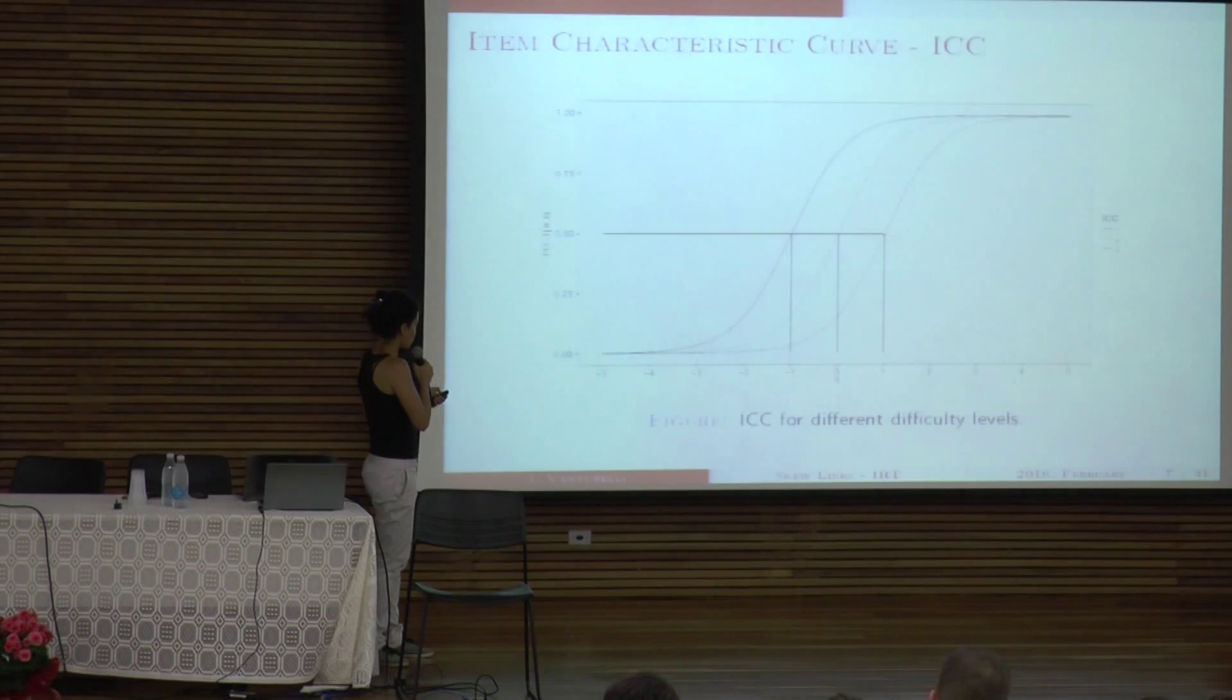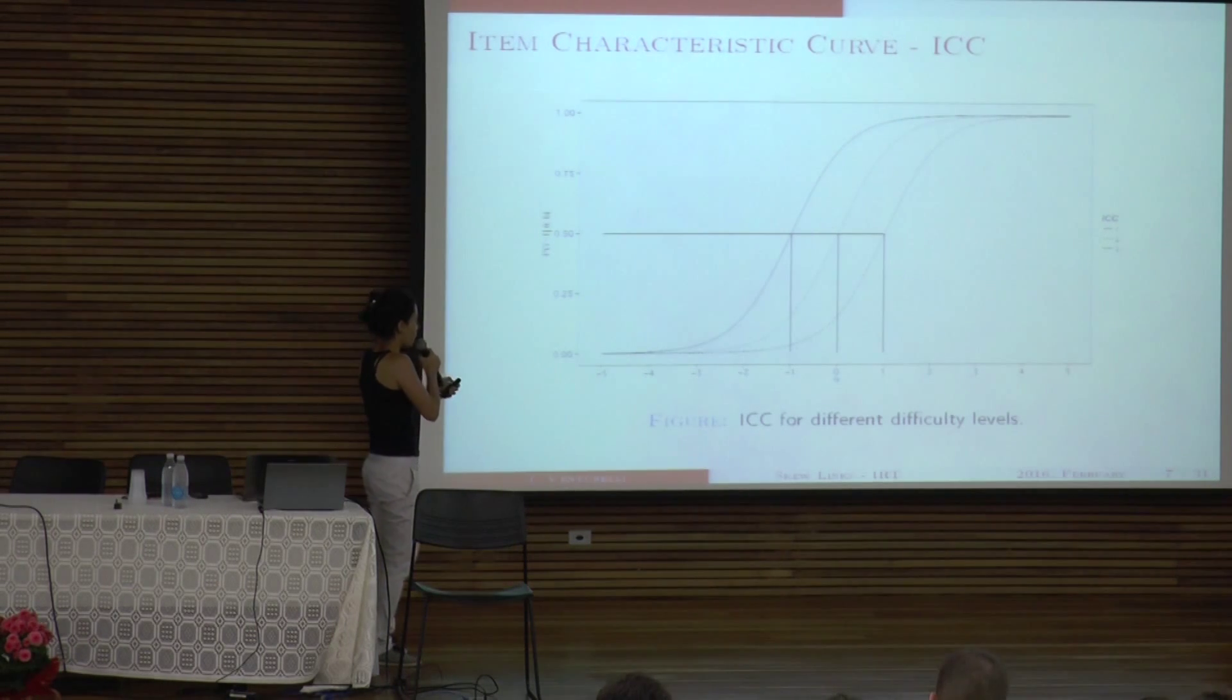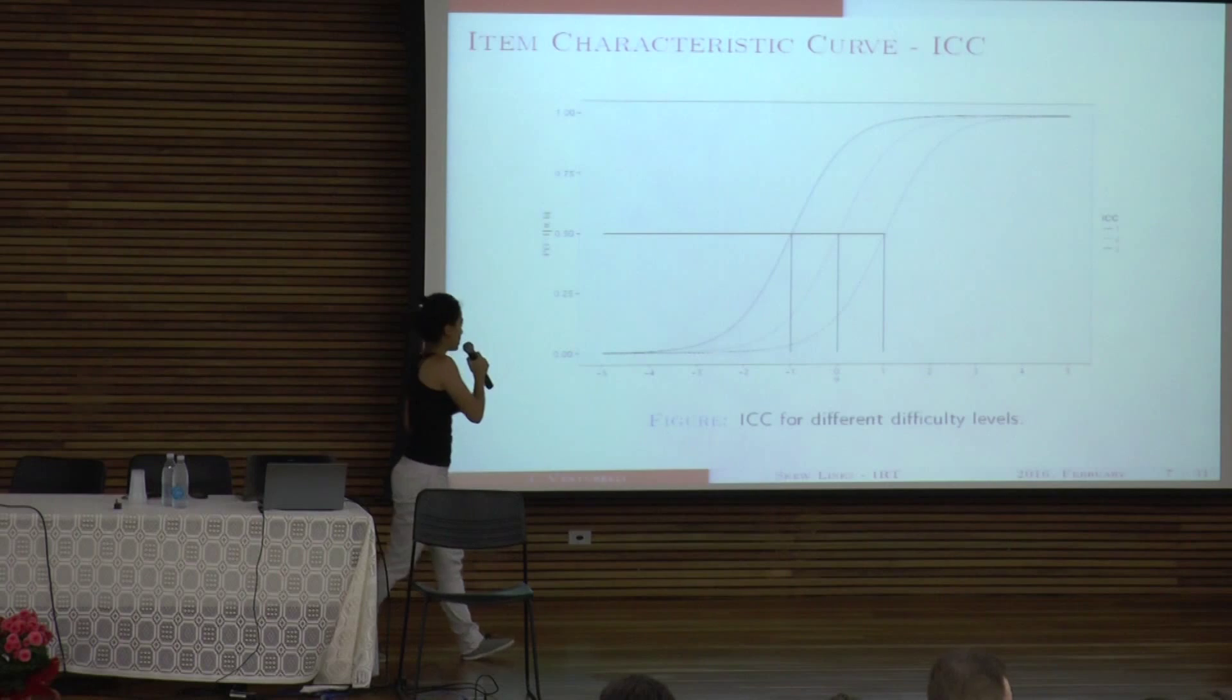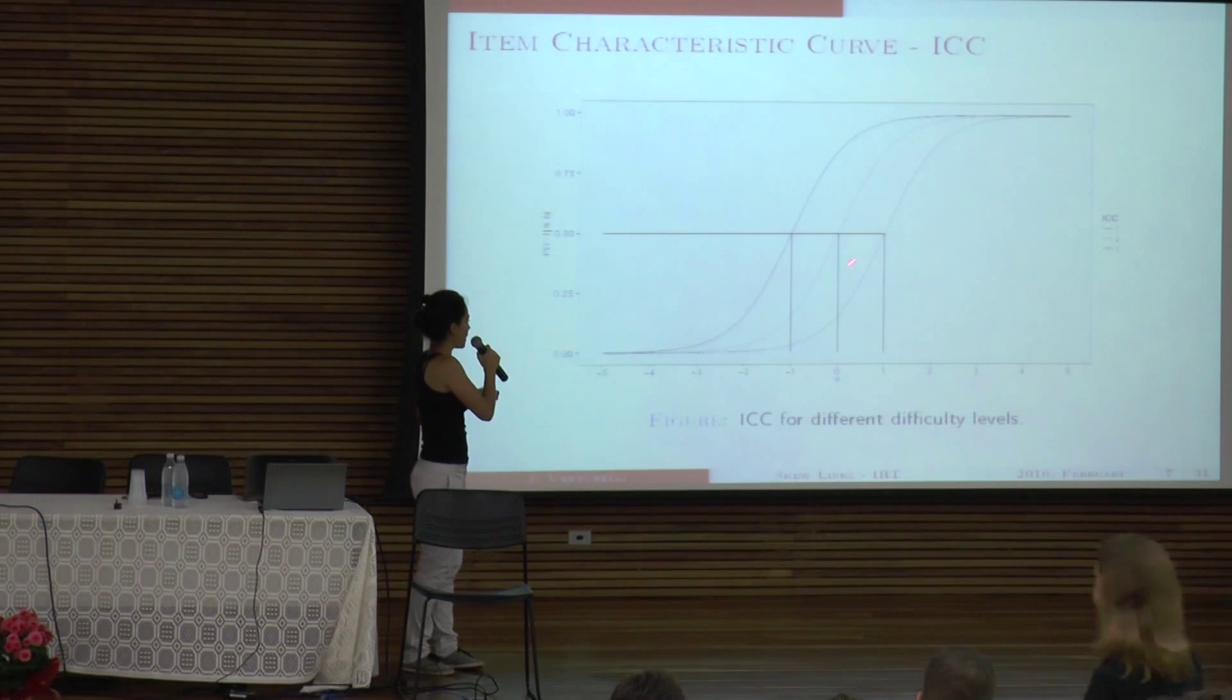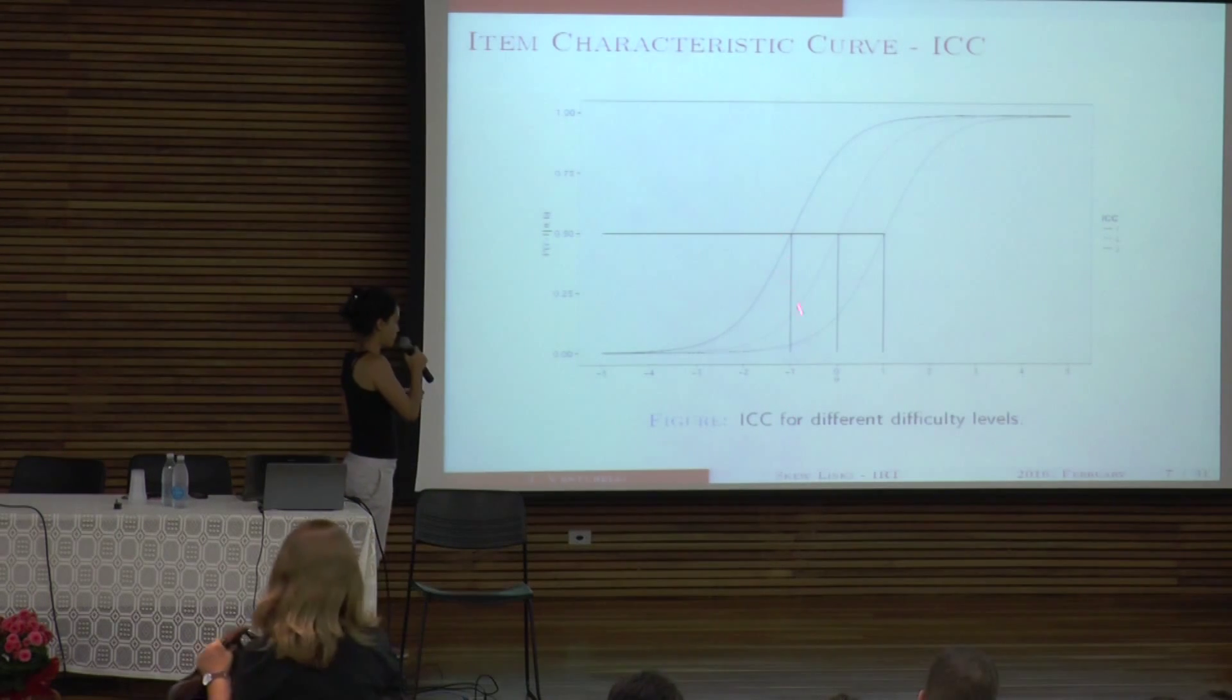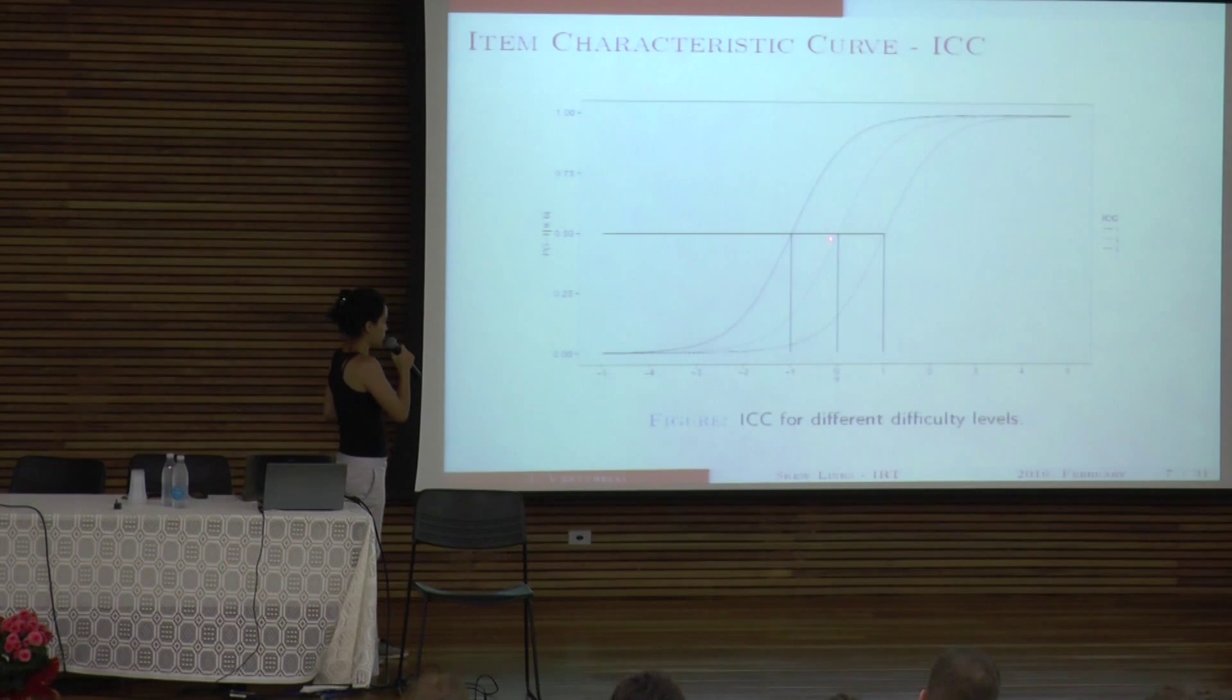So this is how an item characteristic curve should look like. So for each item, we would have one curve like this. And the parameter B, which is the test's difficulty, tells me how much a person must have of ability to endorse an item with that difficulty level. So here I have three curves, and they distinguish between their difficulty. So this one is a more difficult item than this one, and then this one.